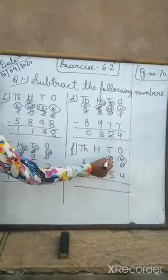10 minus 4 is 6. 12 minus 5 is 7. 14 minus 6 is 8. And 5 minus 3 is 2. The answer is 2876.